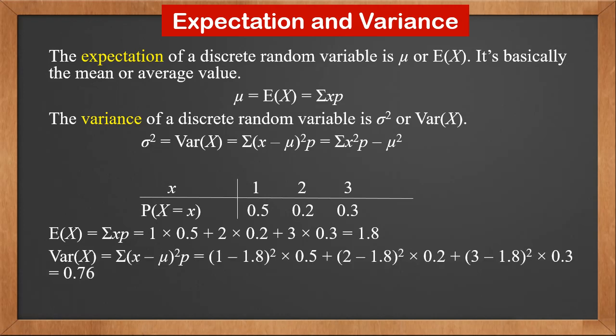Using the first approach, Var(X) is Σ(x - μ)²p. It is (1 - 1.8)² × 0.5 + (2 - 1.8)² × 0.2 + (3 - 1.8)² × 0.3. The result is 0.76.